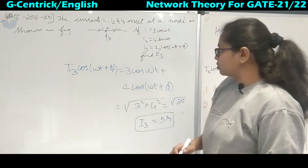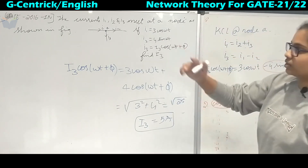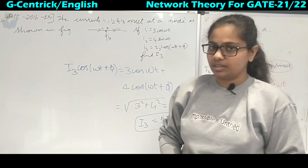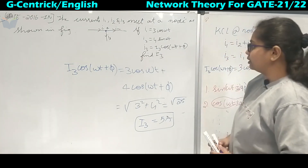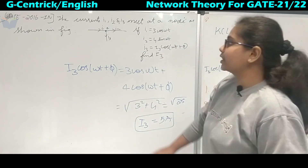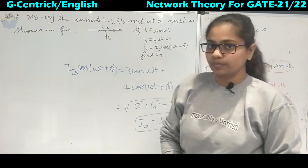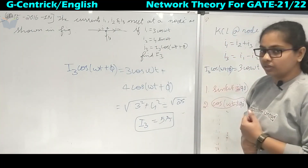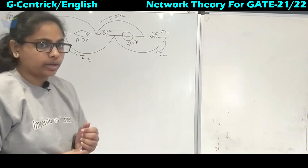So the magnitude of I3 is 5 amperes. This was asked in GATE 2016 instrumentation branch. We haven't done anything beyond simply applying KCL at this node.